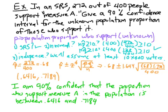Now the calculations. p-hat is 272 out of 400, about 0.68. Here's the formula: p-hat plus or minus z-star square root of p-hat q-hat over n. q-hat is 32%, n is 400. I got z-star from inverse norm of 0.95 because for a 90% interval, there's 5% on each tail. I am 90% confident that the proportion who support measure A in the population is between 0.6416 and 0.7184.